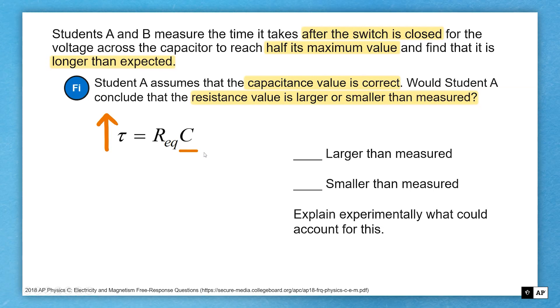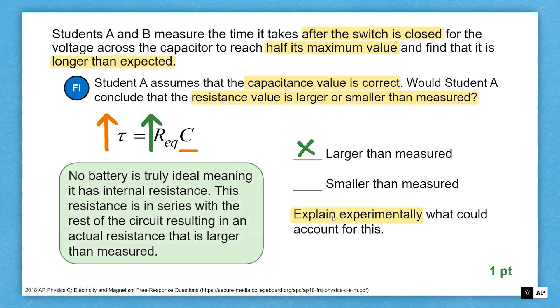So you're assuming this capacitance is correct. That's not allowed to change. So if you do say that the time constant was longer than expected, that means that my equivalent resistance must have been larger than measured. So checking this box is all great, but I need to make sure I also explain what would account for this. Here's one possible explanation. The battery is not ideal.